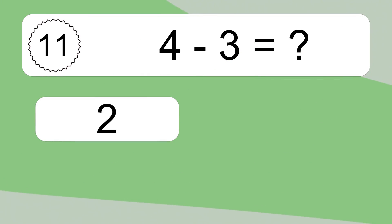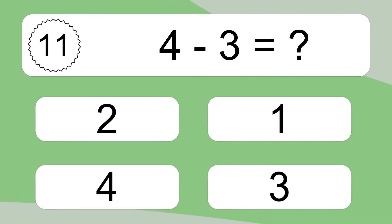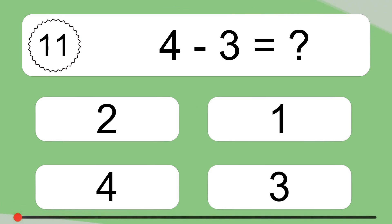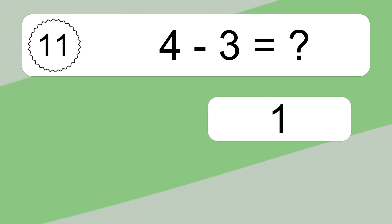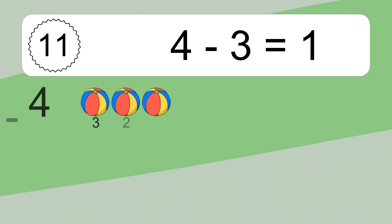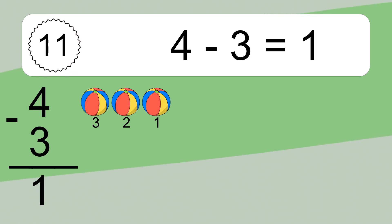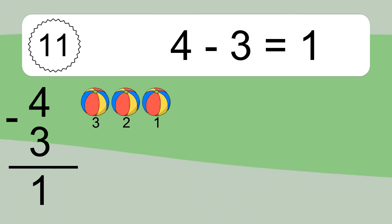4 minus 3 equals what? 4 minus 3 equals 1. Let's count it: 3, 2, 1.